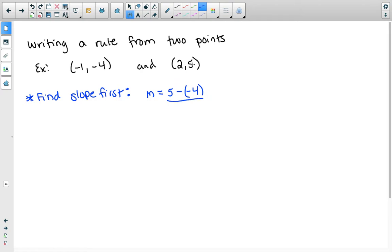It's going to be y minus my other y, which is negative 4, divided by, since I started with the 5 for my y, I'm going to start with the 2 for my x. So it'll be 2 minus my other x is negative 1.